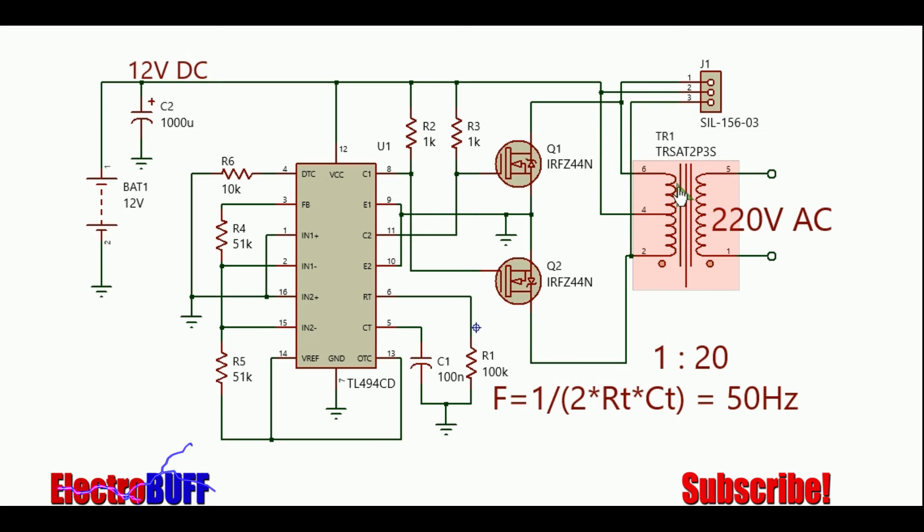Current will flow from the 12 volt rail through the center tap primary through the upper half primary winding through Q1 and to ground. When the second transistor turns on, the second MOSFET will conduct since the gate of Q1 will be pulled down to ground but the first transistor is off, so at Q2 there will be a high pass.